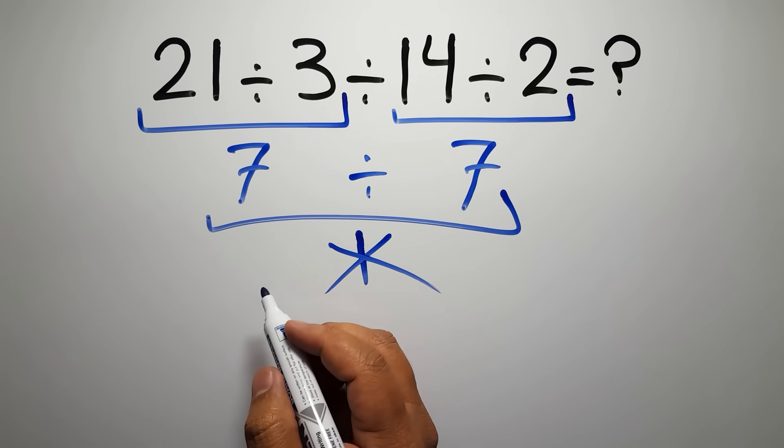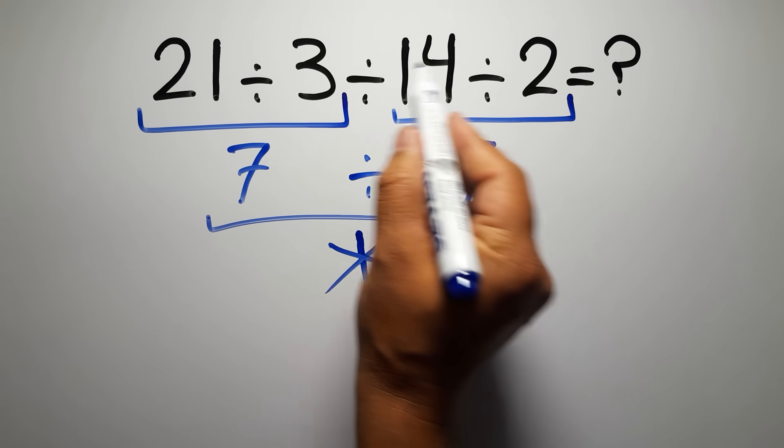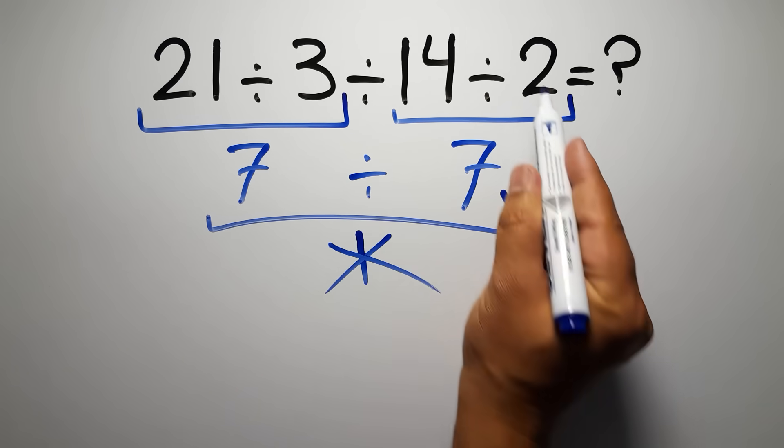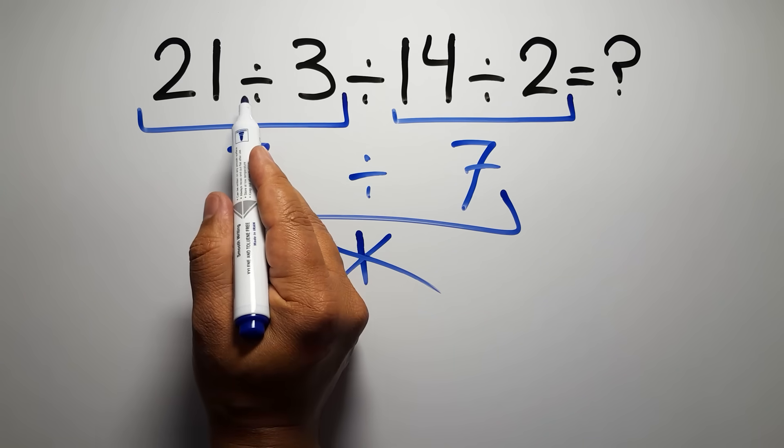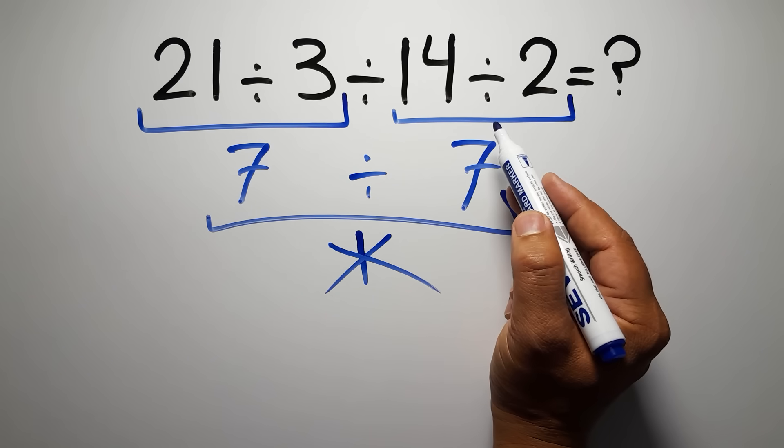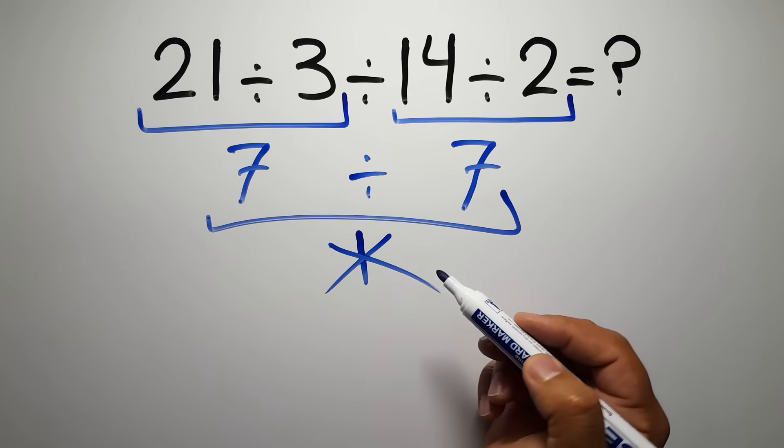Because according to the rule of operations, when we have more than one division in an expression, we have to work from left to right. So here first we have to do this division, then this division, and finally this division. If we do this division before this division, it is wrong.